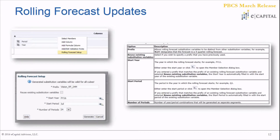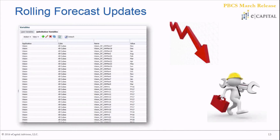Once you click rolling forecast setup, a menu appears. The first field is the prefix — for example, 'Vision RF 24M' for a 24-month rolling forecast. You then set your start year and start period; in this case the fiscal year starts in July. There are also helpful definitions for each property in the menu. There's also a checkbox to reuse existing substitution variables, allowing you to leverage a prefix or variable you've used before on a different form.